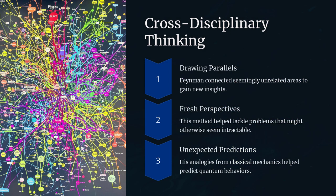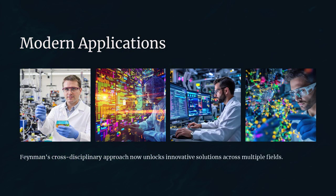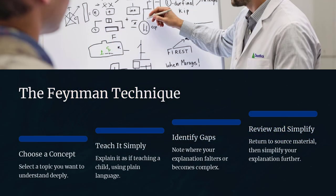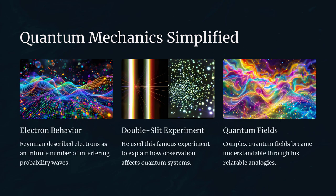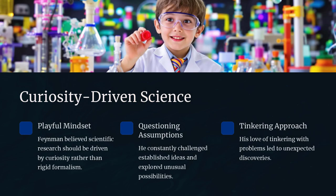A question that drove him to develop simplified models and thought experiments to strip away unnecessary complexity. For example, when he developed his famous Feynman diagrams in quantum electrodynamics, he visualized interactions between particles as simple lines and vertices, making complex calculations more intuitive and manageable.